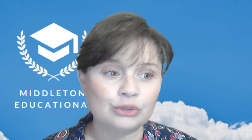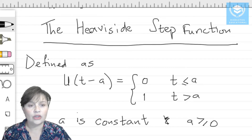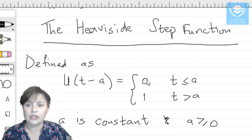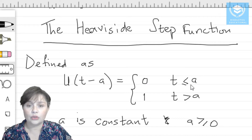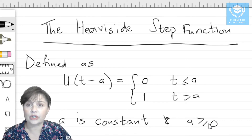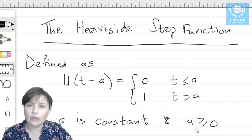The Heaviside step function is defined as a function u of t minus a, and that is equal to two values: zero, where t is less than or equal to a, and one, where t is greater than a. The constant a is where a is greater than or equal to zero.